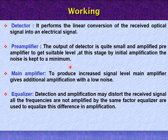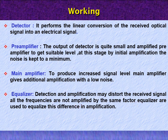Then it goes to the main amplifier. To produce the increased signal level, the main amplifier gives additional amplification with low noise. In the equalizer stage, detection and amplification may distort the received signal, as all frequencies are not amplified by the same factor. So equalizers are used to equalize the difference in amplification.